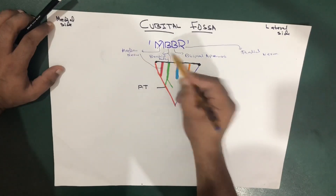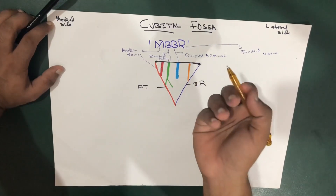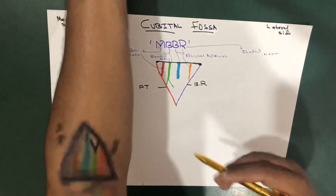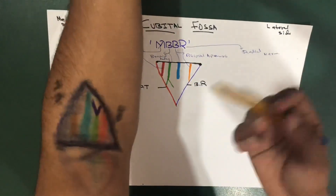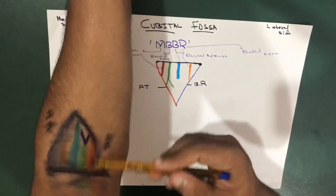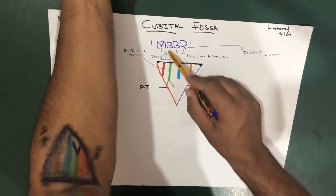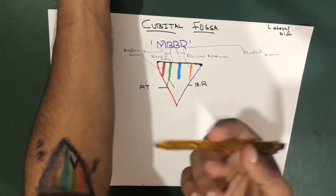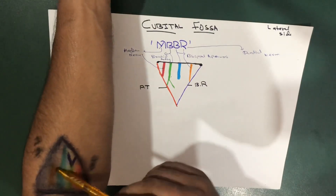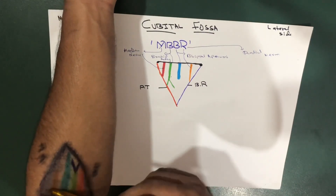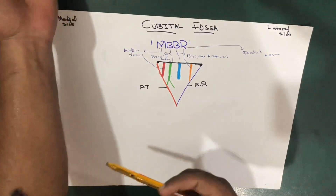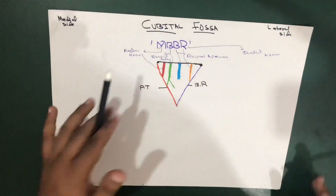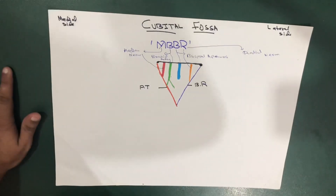On my hand: the red color shows M (median nerve), blue shows the brachial artery (first B), the other color shows the bicipital aponeurosis (second B), and orange shows R (radial nerve). The brachial artery further divides into two branches. You can see clearly how it looks between the arm and forearm.